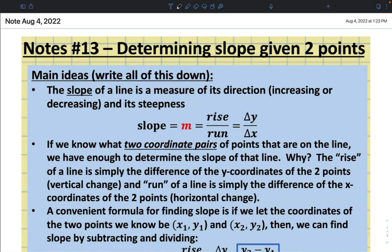So here are our main ideas. It's probably a good idea for you to write all of this down in your notebook. The slope of a line is a measure of its direction, increasing or decreasing, and its steepness.